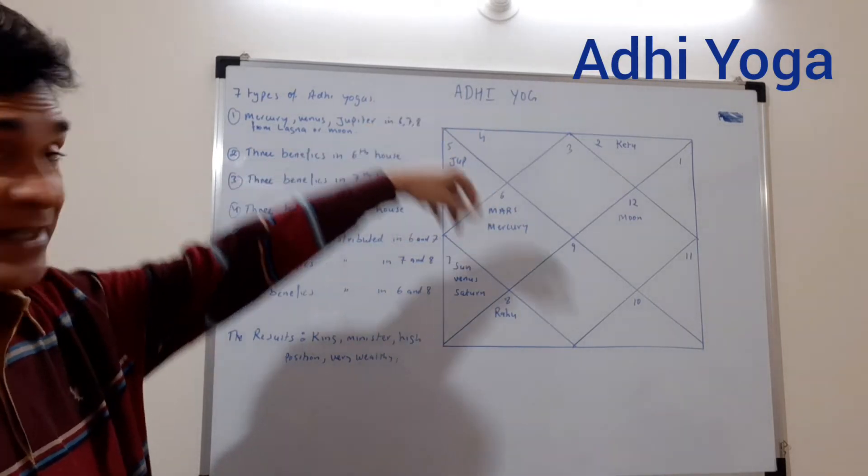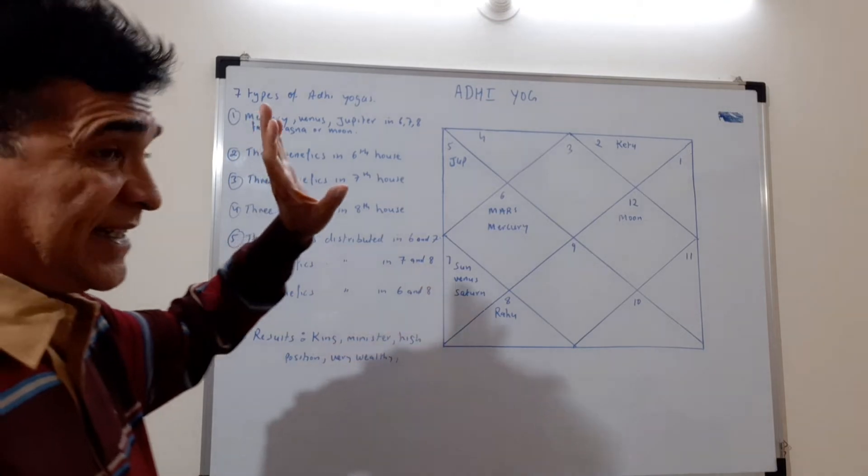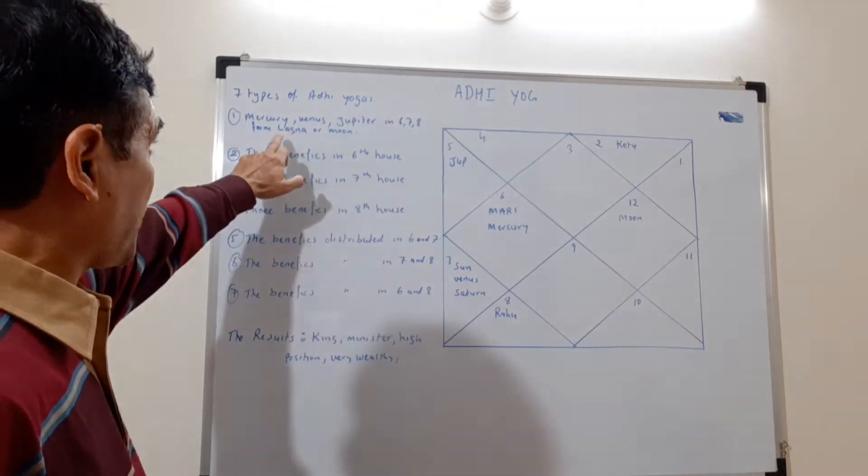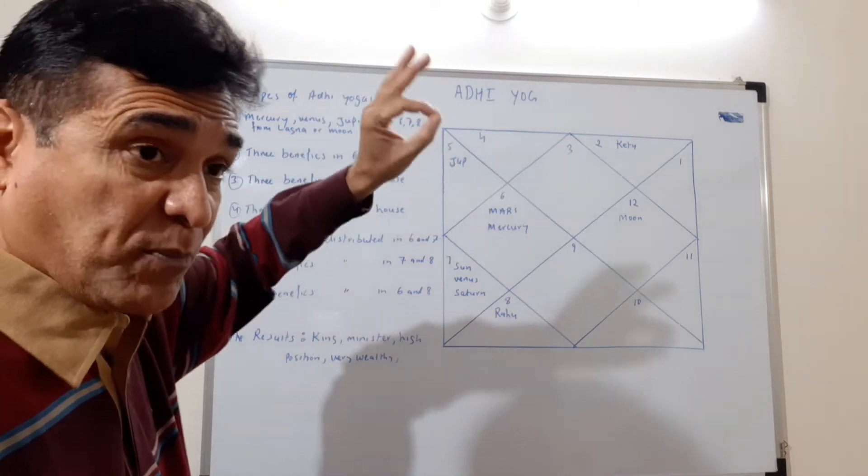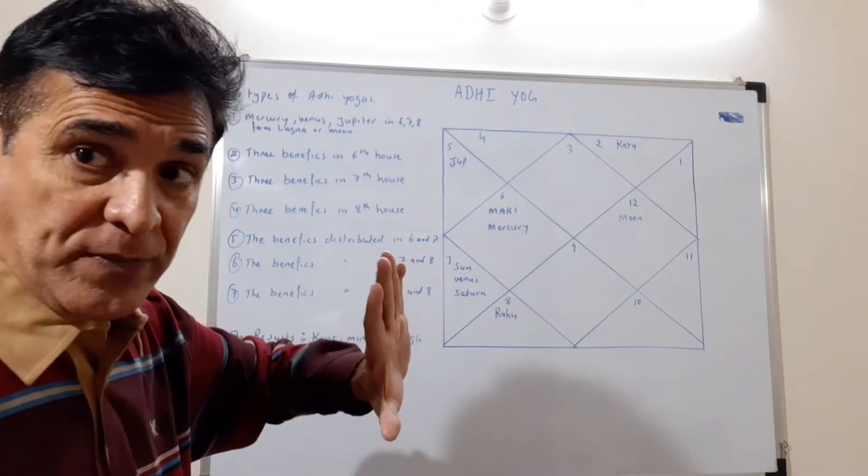Okay, now this is the Adhi Yoga. There are seven types of Adhi Yoga, out of which I will be talking about the first one which is the most prominent. Though it is not showing in this chart, I'll explain to you.